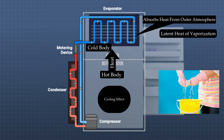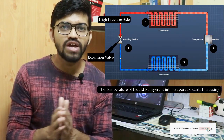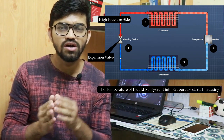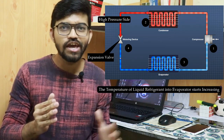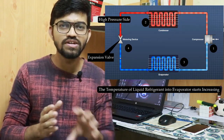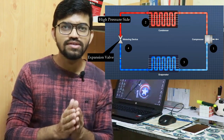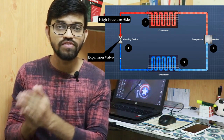This is how the desired cooling effect is achieved in the evaporator. By the end of the evaporator, the refrigerant is at high temperature but very low pressure. It is then allowed to pass back through the compressor, where the pressure and temperature increase again. This is the complete actual process of the vapor compression refrigeration system.